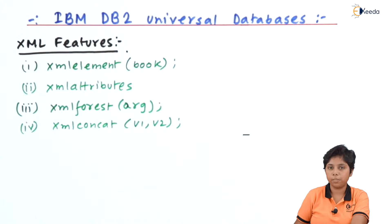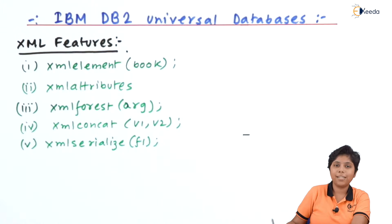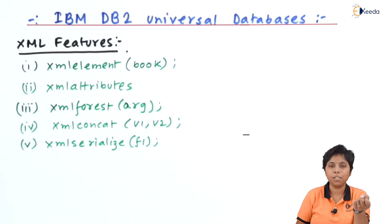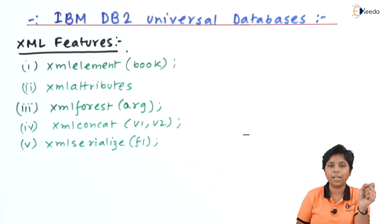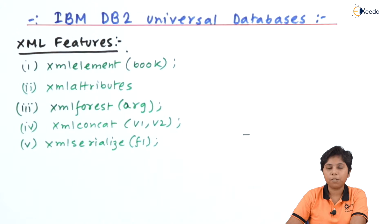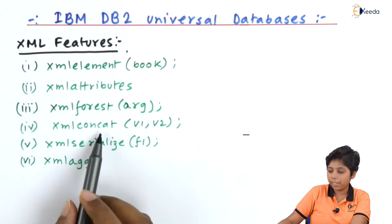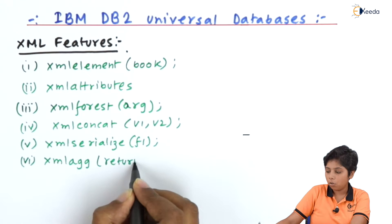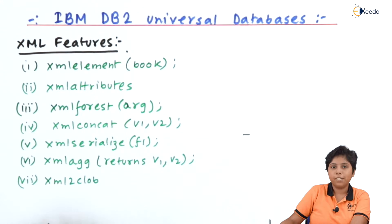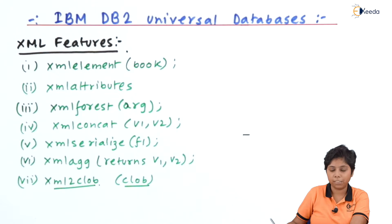XML Concat concatenates two values: for variables v1 and v2, the result is v1v2. XML Serialize makes a function serializable. There are two more additions to XML in DB2: XML Agg, which like XML Concat returns a concatenated or aggregated value; and XML to Clob, a data type featuring the CLOB (Character Large Object) data type, which is the XML version used for XML to Clob.